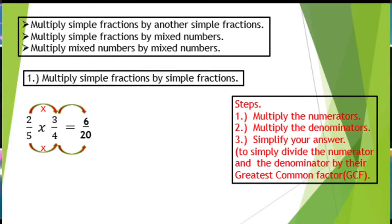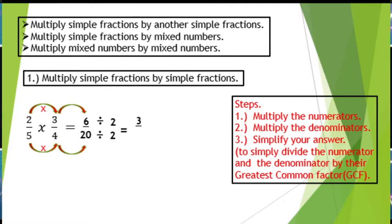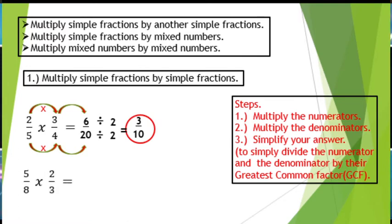We have now 6 over 20. But 6 over 20 is not in simplest form. To simplify 6 over 20, we need to divide the numerator 6 and the denominator 20 by their GCF. The GCF of 6 and 20 is 2. So, 6 divided by 2 is 3, and 20 divided by 2 is 10. Our final answer will be 3 over 10.